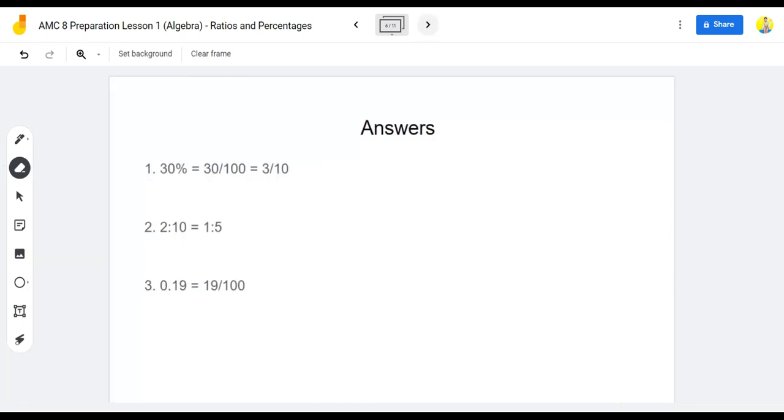So the answers. 30% is equal to 30 over 100. We do this because we remove the percent and divide by 100. From 30 over 100 to 3 over 10, we divide by 10 in the numerator and the denominator.